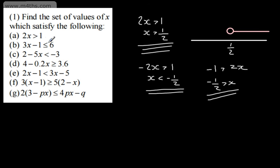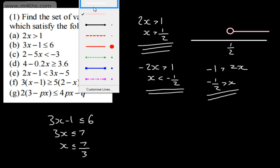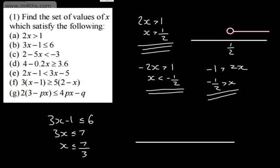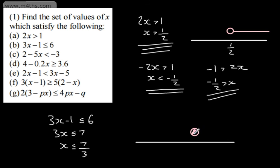Next: 3x minus 1 is equal to or less than 6. Adding 1 to both sides gives 3x equal to or less than 7. Dividing through by 3 gives x equal to or less than 7 thirds. To draw this on a number line, we place the dot at 7 thirds. This time it's inclusive, so we use a closed dot, then shade to the left. So 0, negative 1, and so on are all included.